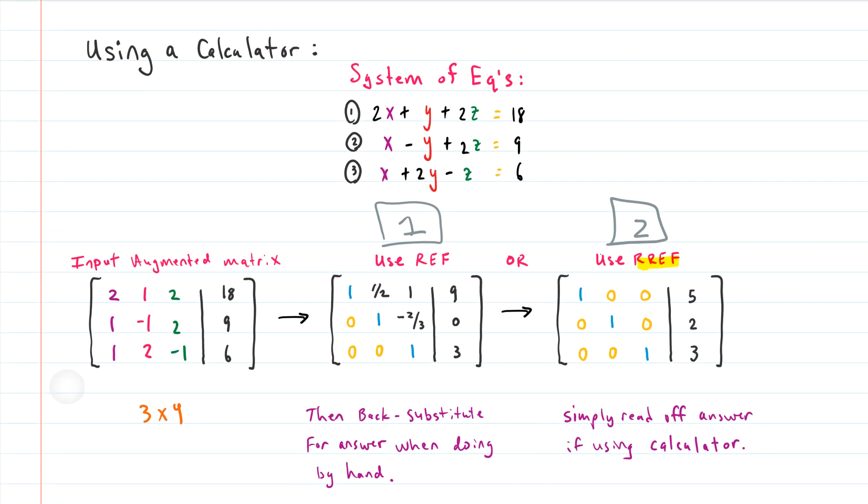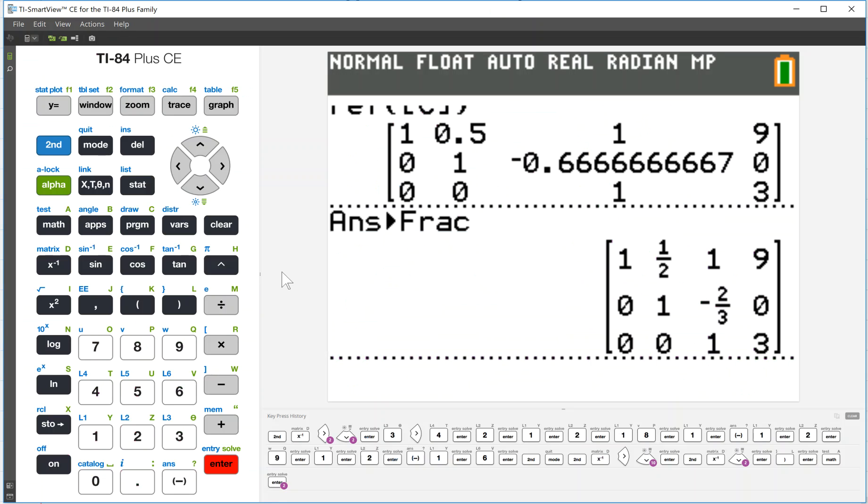But if we're gonna do this with a calculator we might as well just go all the way. We might as well just let our calculator do it all. Why don't we just let our calculator put our matrix into reduced row echelon form using the RREF function, and we can literally read off the answer. Let's go back to our calculator and hit second matrix, go to the math area, and I'm actually going to go up because it's faster.